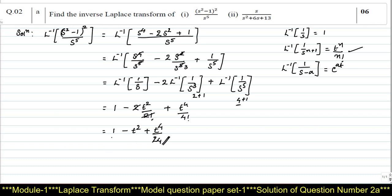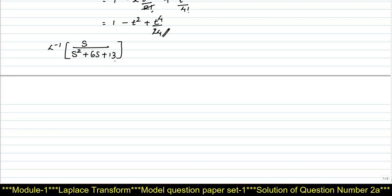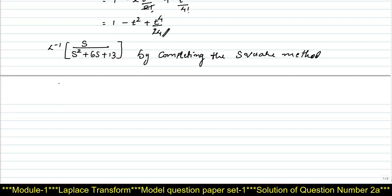Now let us see the second solution. The given question requires us to find L inverse of s divided by s² + 6s + 13. Moving with the solution, looking at the denominator s² + 6s + 13, we require to solve this by the completing the square method.